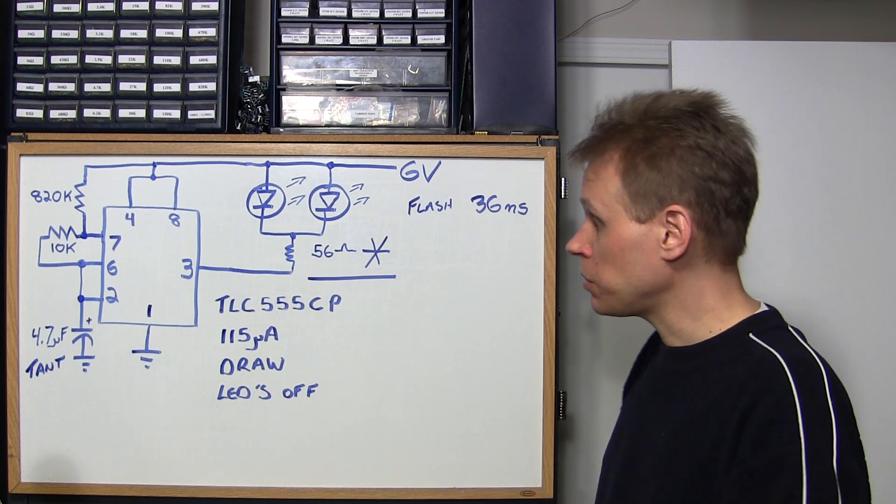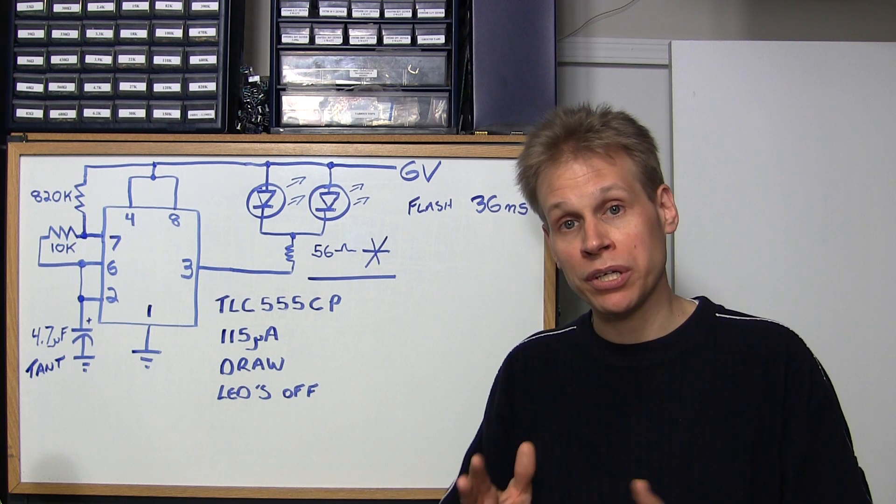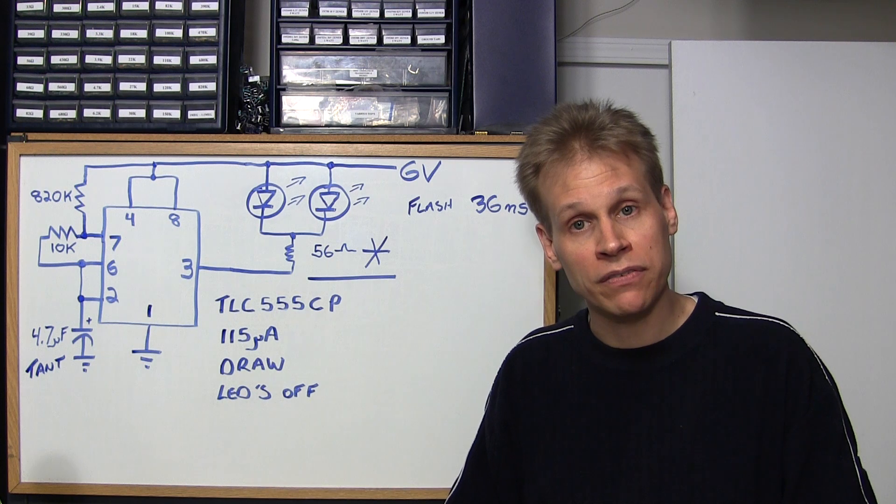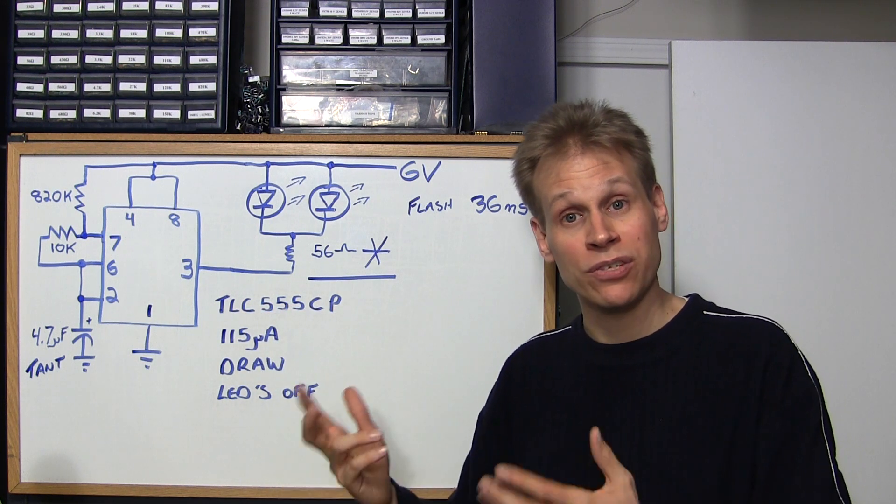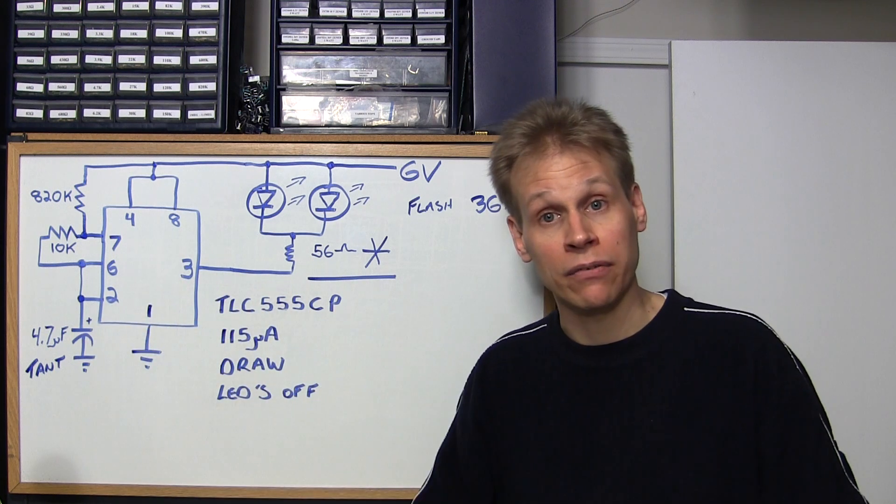If you're going to use AA's or AAA's it wouldn't be so incredibly important, you could probably get away with a regular 555 timer. But again if you use this part number with those AA's or AAA's you'd get that much more life again.